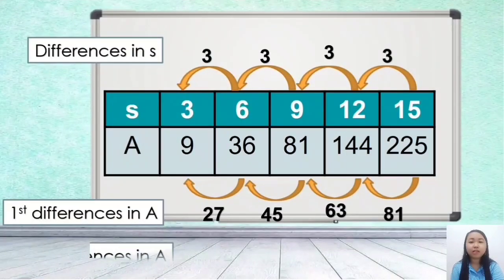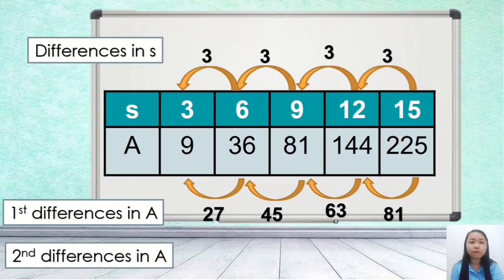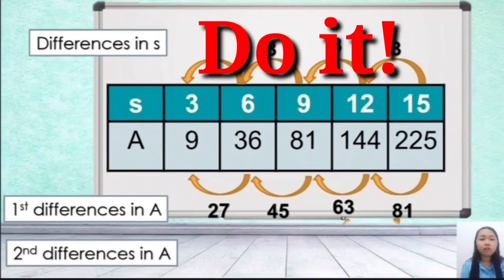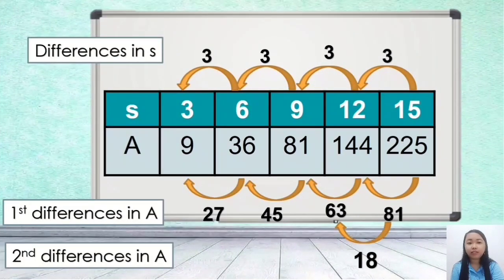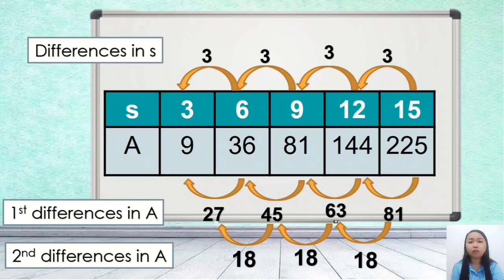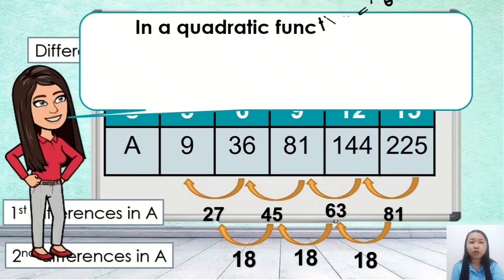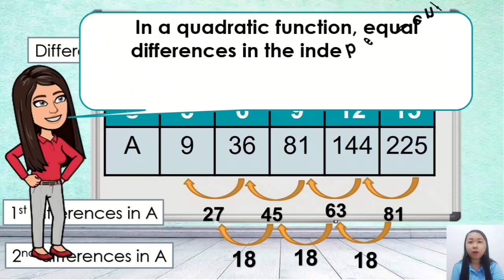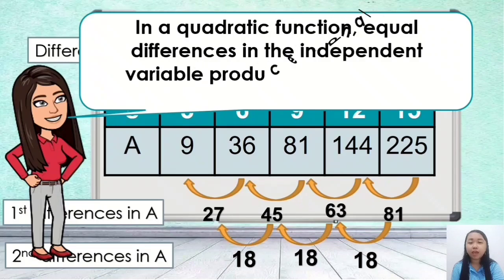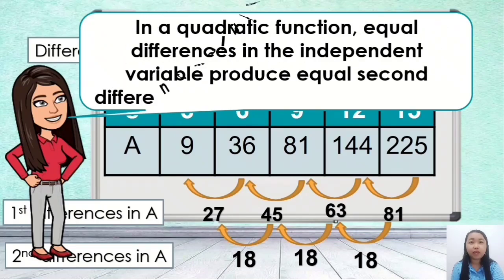Next, we get the second differences in A: 81 minus 63 is 18, 63 minus 45 is 18, and 45 minus 27 is 18. In the second differences in the dependent variable, the answers are all equal. Therefore, in a quadratic function, equal differences in the independent variable produce equal second differences in the dependent variable.